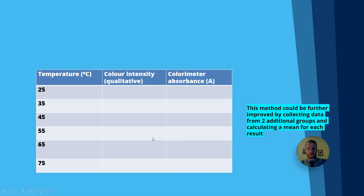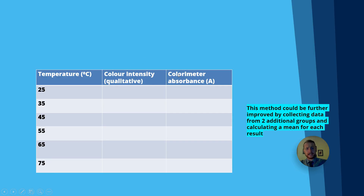This is an experiment you may have to look at. I always like to show the table first, because that gives us our independent variable — the thing we're changing — which is temperature on the left, and our dependent variable — the thing we're measuring — which is color intensity and colorimeter absorbance on the right. This is a required practical you must complete to get your practical certificate, and it can come up in the exam.